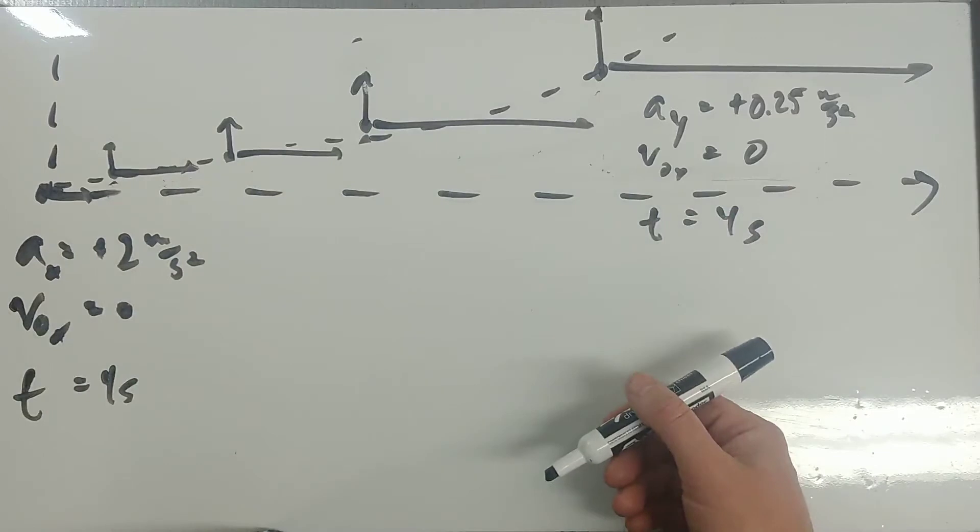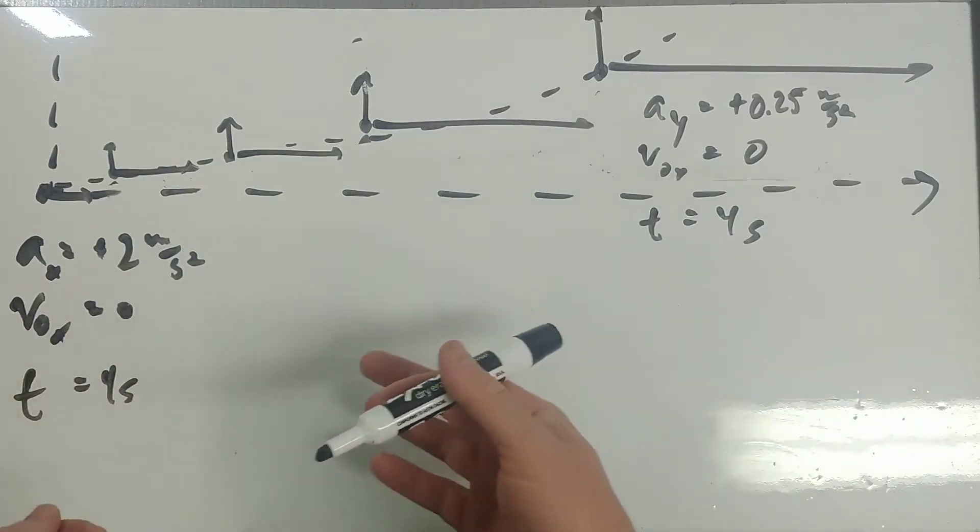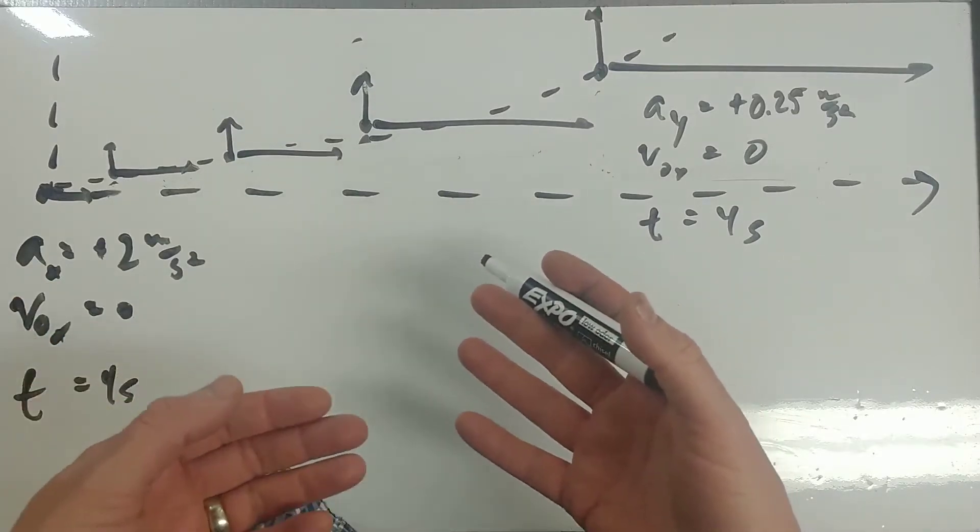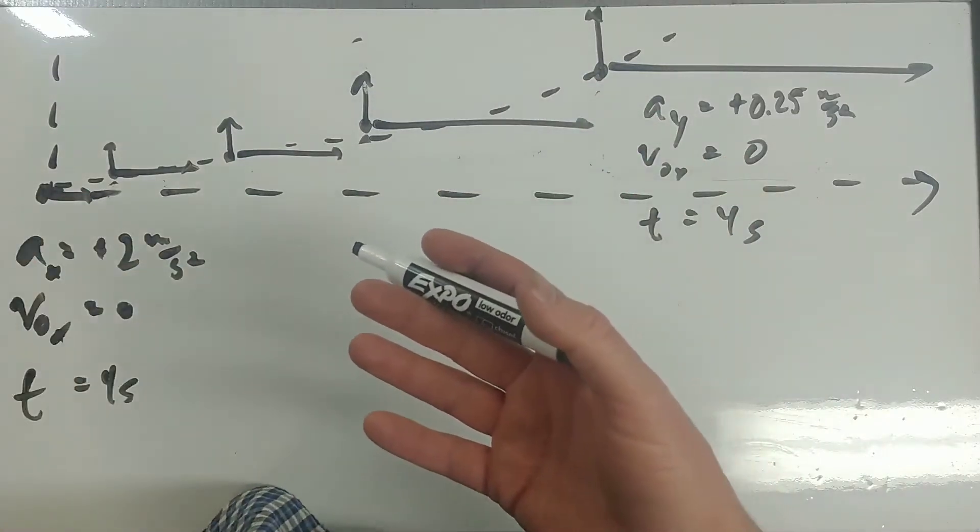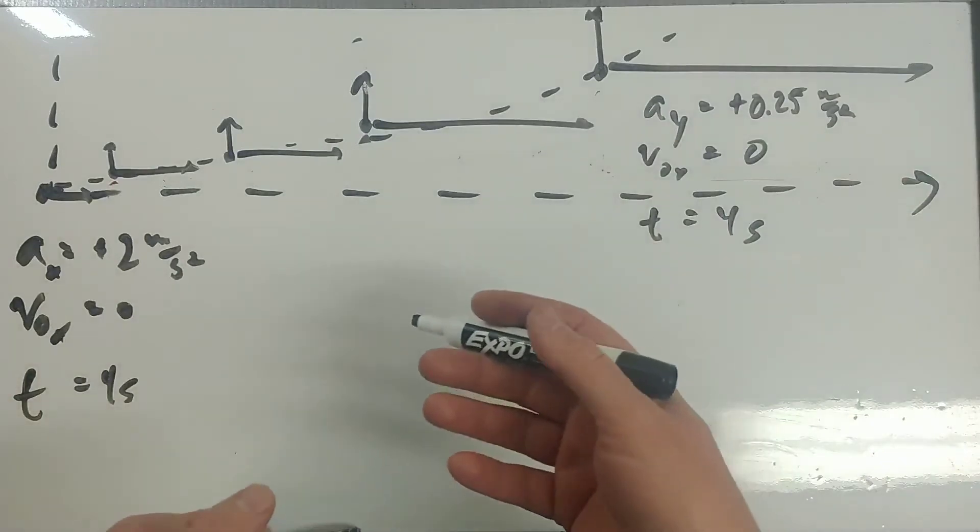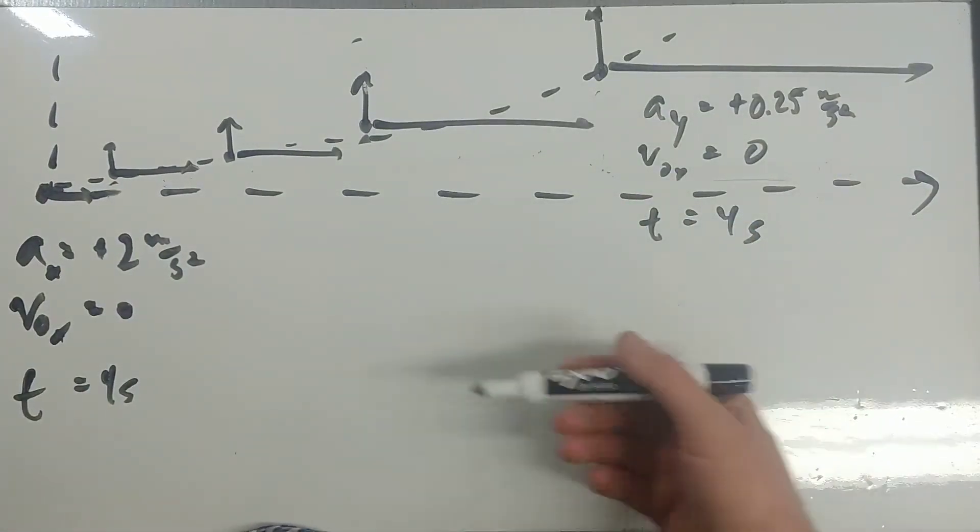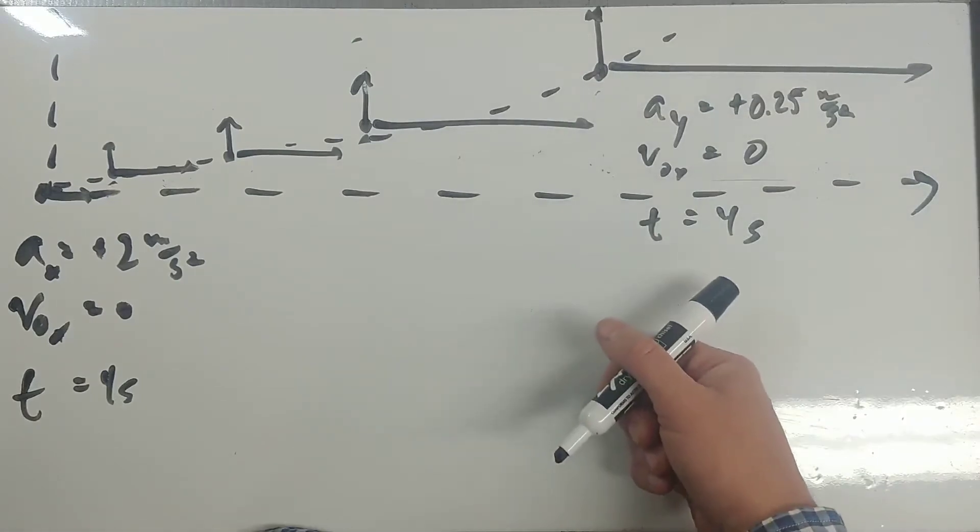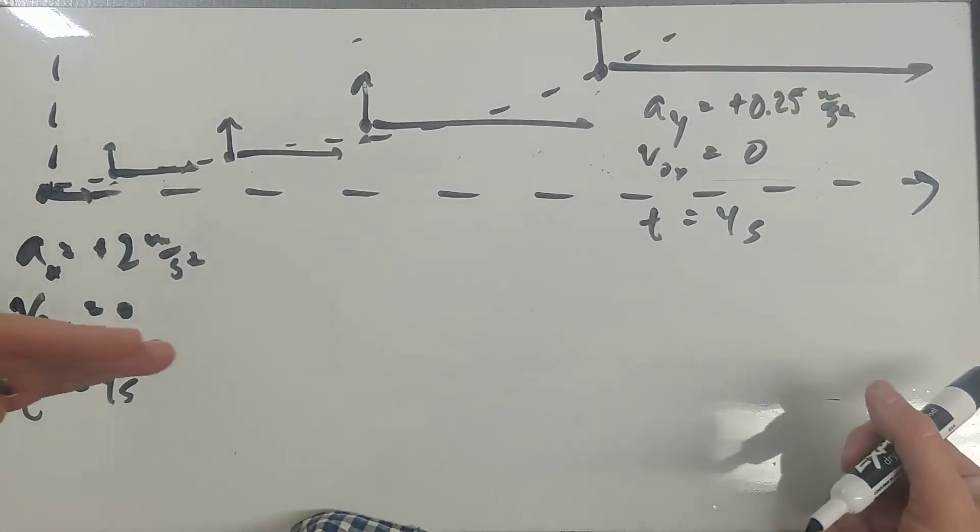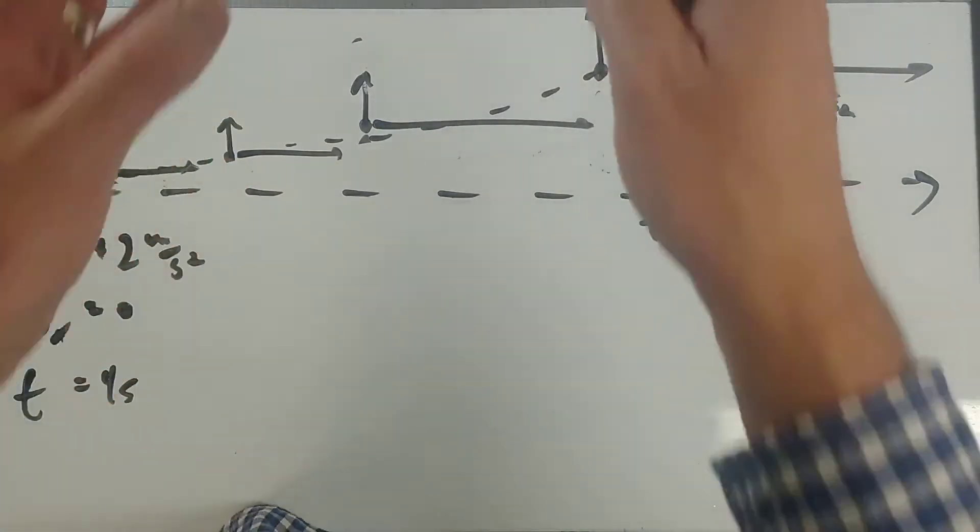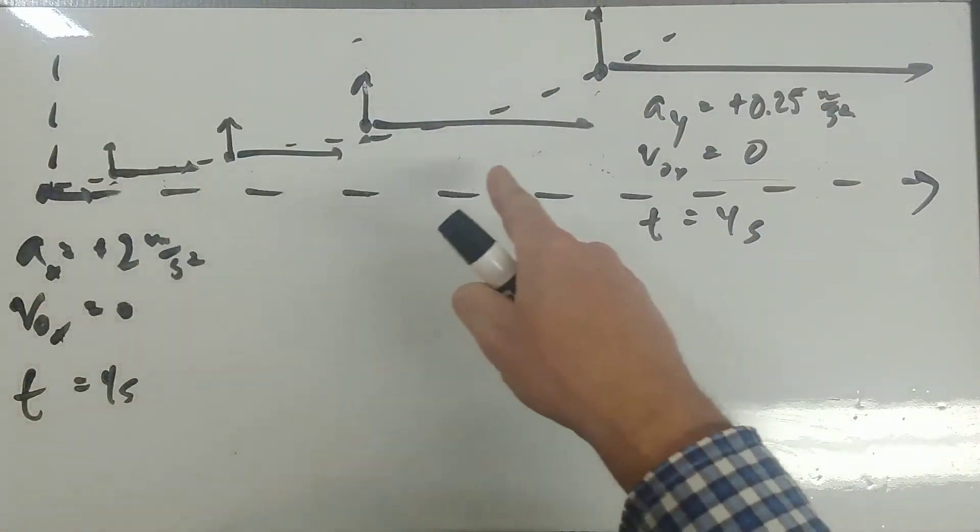There's no different than what we've been doing. We break it into x and y direction. But what's different now is that we can't just take for granted that acceleration in the x-direction is zero and acceleration in the y-direction is positive 9.8. This could be a sailboat, this could be a boat going in water that's also moving this way.